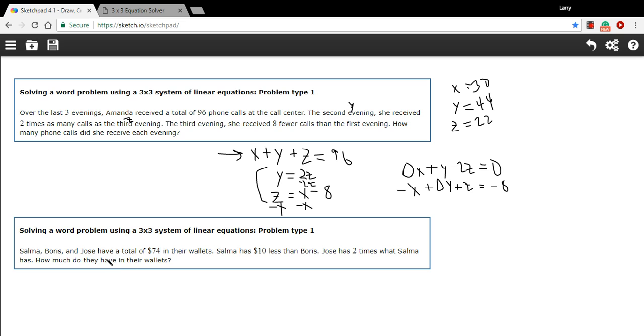Let's try another one here. This one says Salma, Boris, and Jose have a total of $74 in their wallets. Salma has 10 less than Boris. Jose has two times what Salma has. How much do they have in their wallets? So let's call what Salma has in her wallet X, what Boris has Y, and what Jose has Z. It says they have a total of $74. So that's just going to be X plus Y plus Z equals 74.